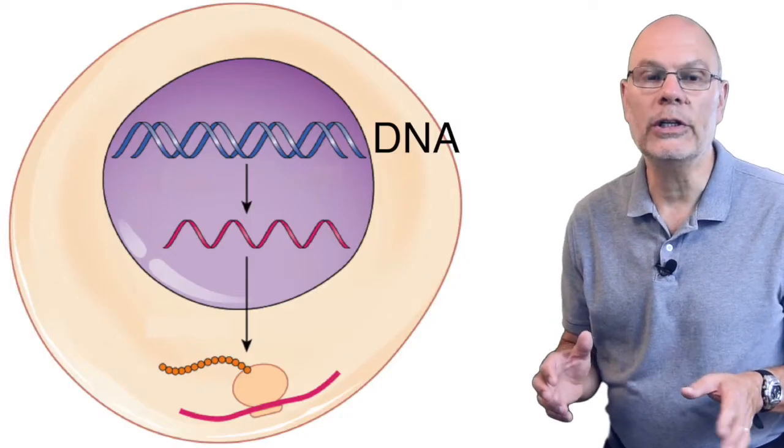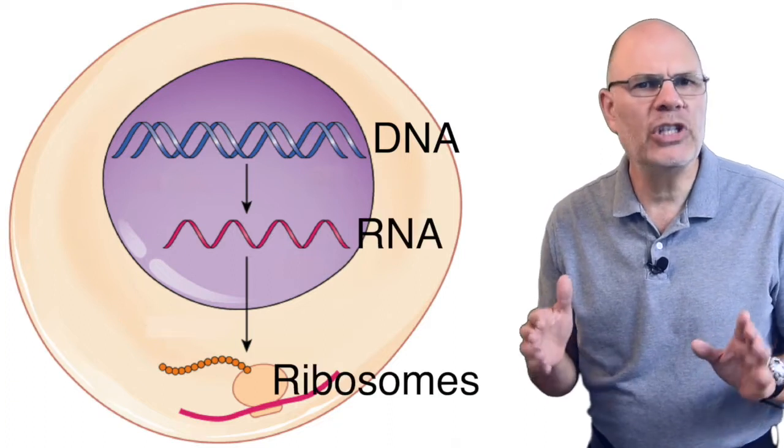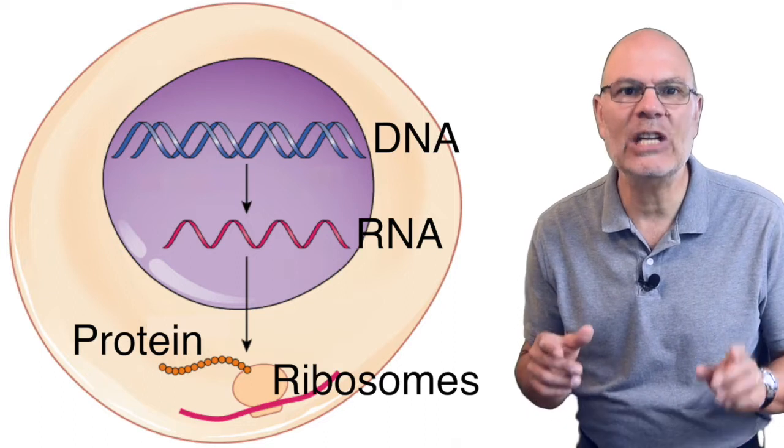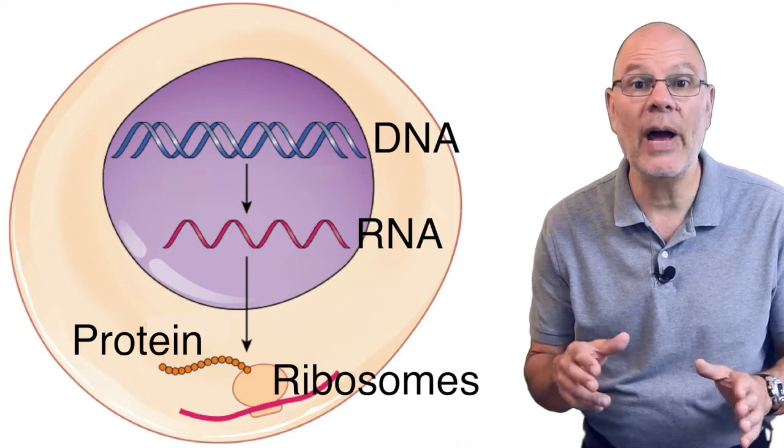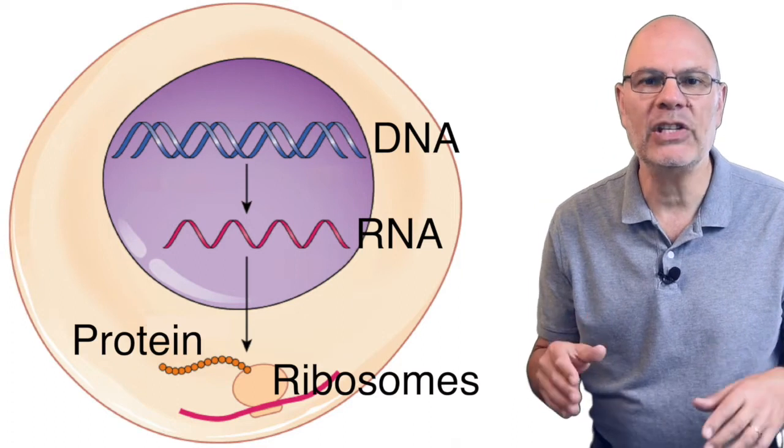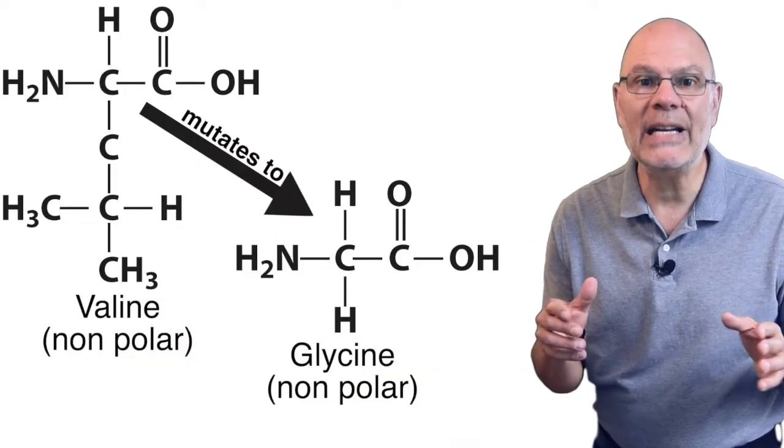Here's why this is important. In cells, DNA makes a molecule called RNA, which tells ribosomes how to make proteins. Mutations in DNA can wind up substituting one amino acid for another. If the change results in the same type of amino acid, nonpolar for nonpolar, then that mutation might not be a big deal.